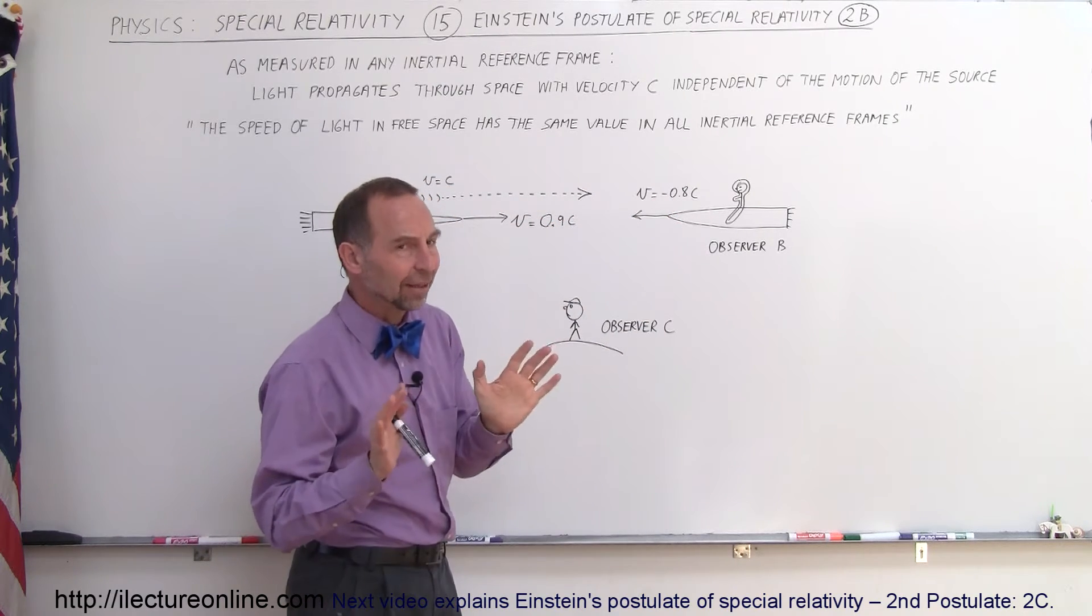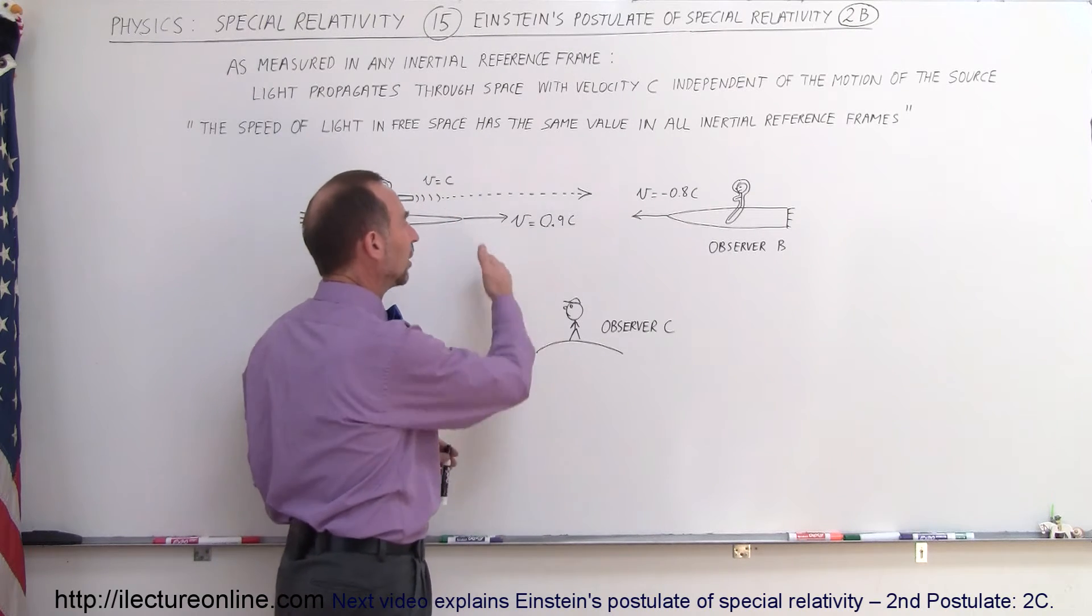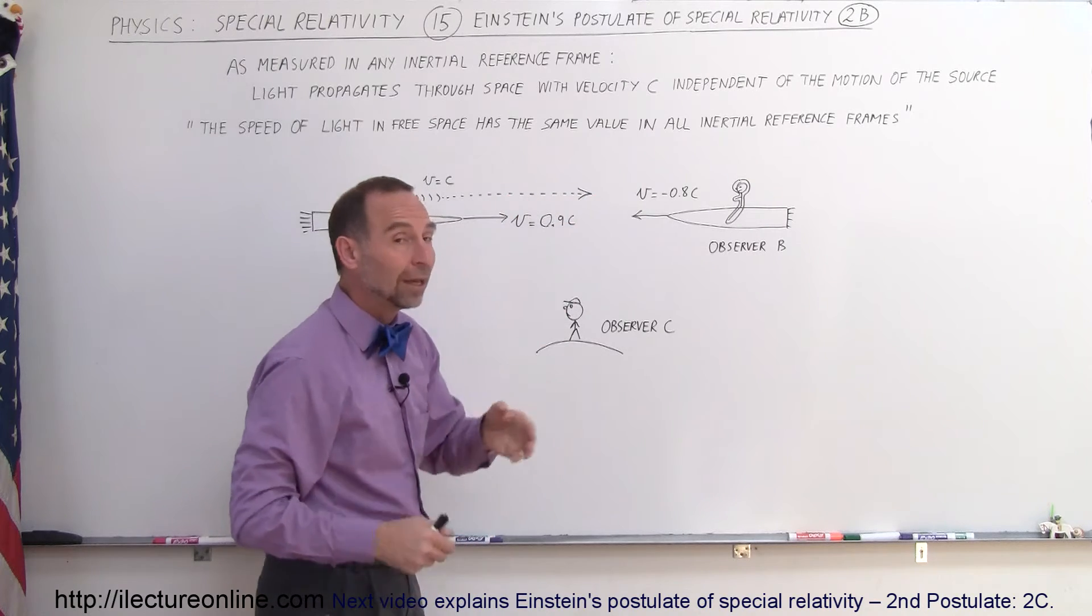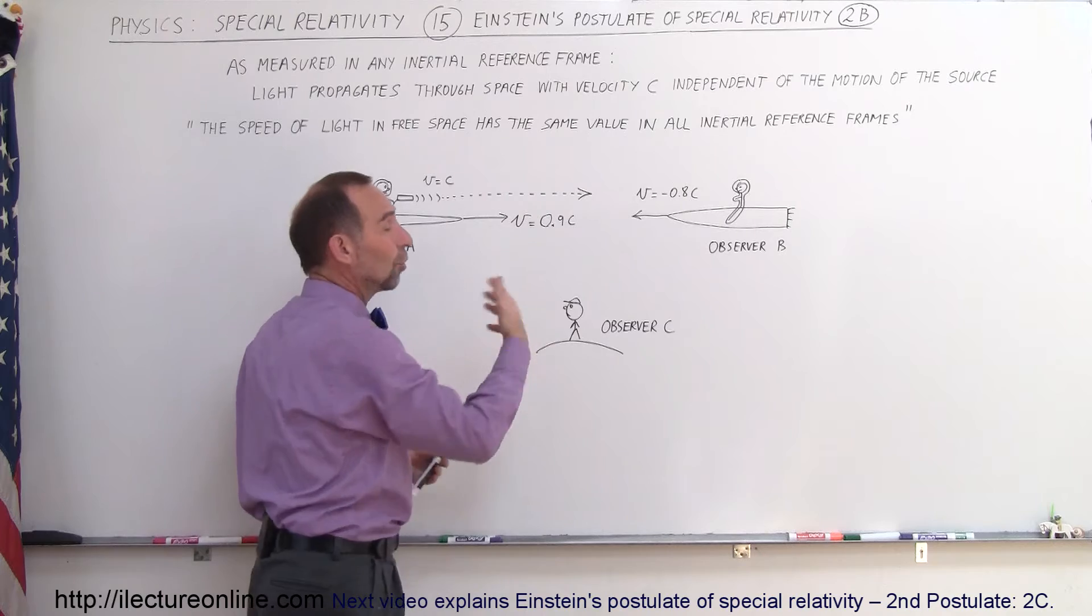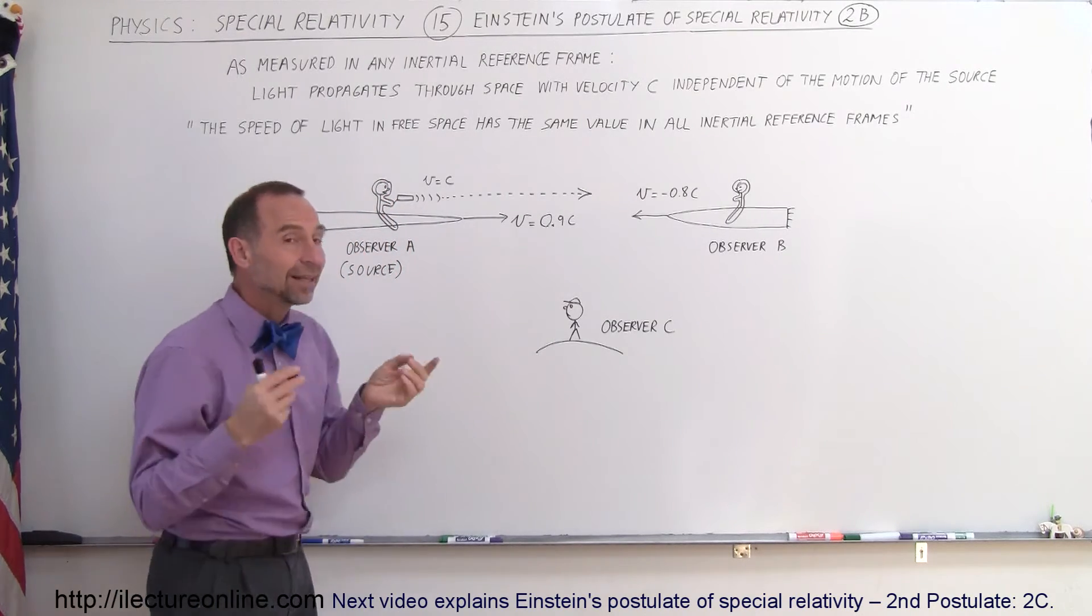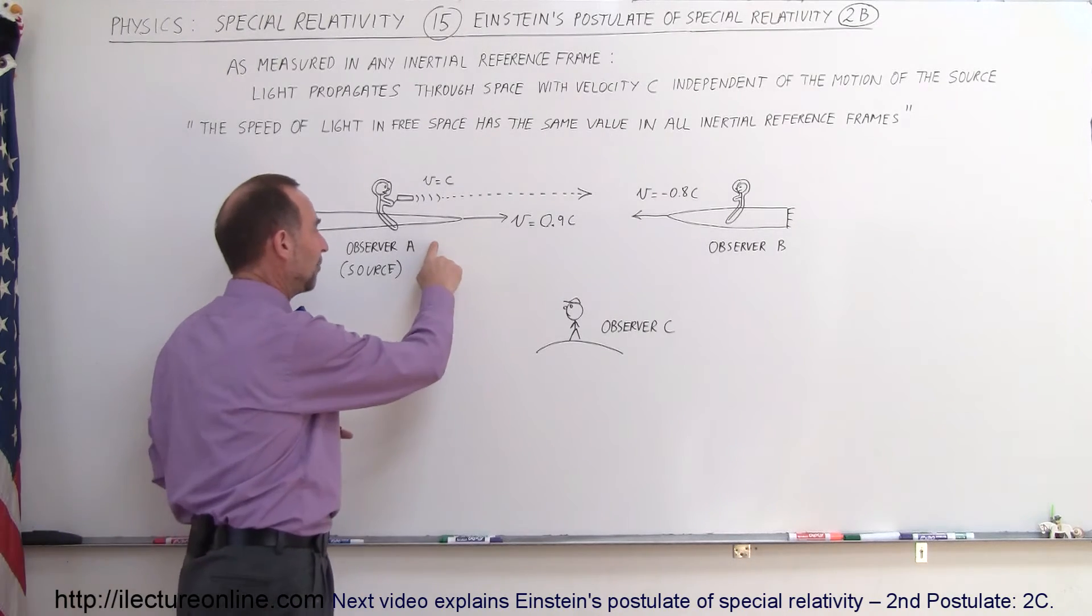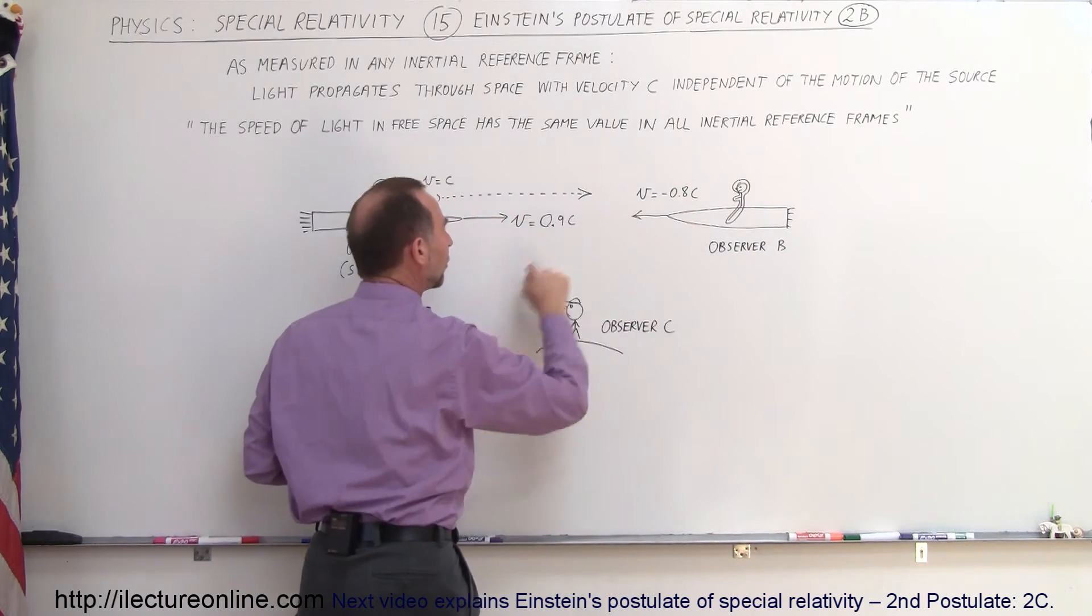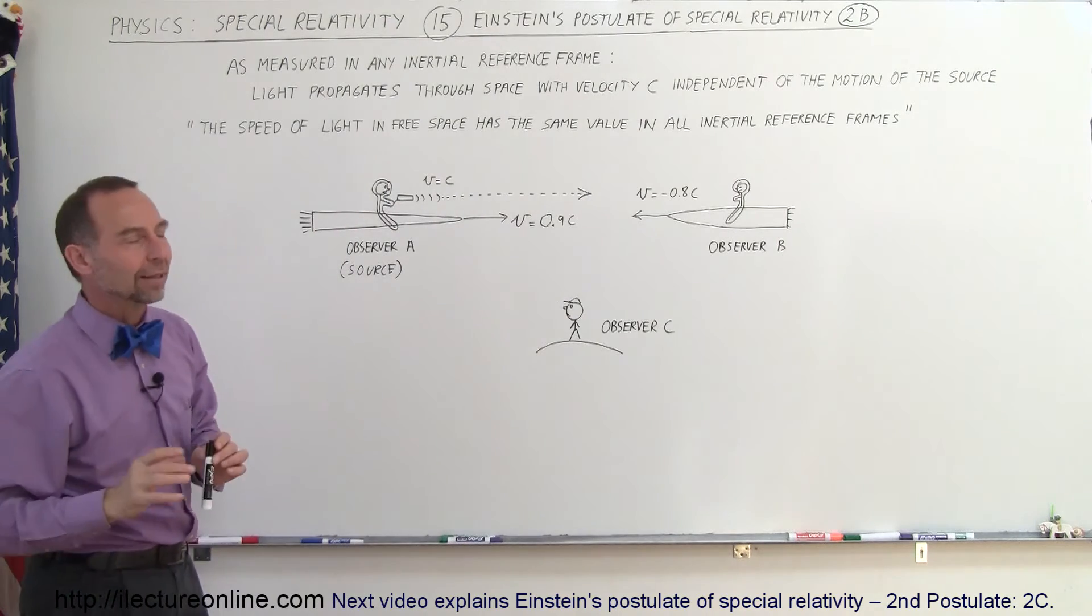Again, Einstein said that's not going to be the case. And then we have a third observer standing on a nearby planet looking at these events unfolding and sees the light traveling this way. To this observer, does the light appear to be going at 1.9c or does it also appear to be going at c? Again, if we take this sentence here to heart, Einstein claimed that no matter what inertial reference frame you're in, reference frame A, reference frame B, reference frame C, all three observers will see the light moving through space at the speed of light.